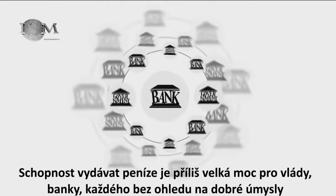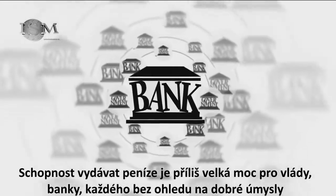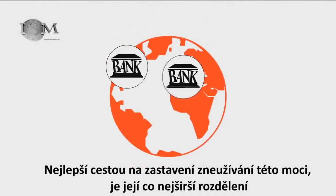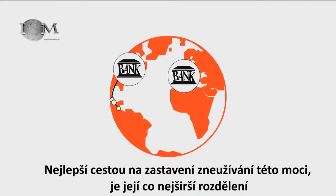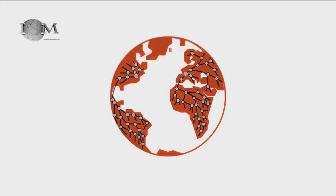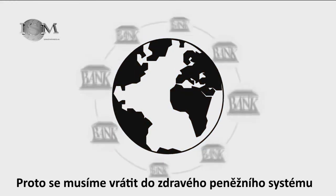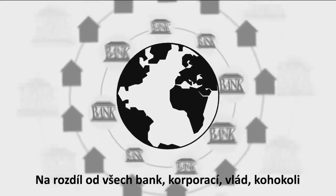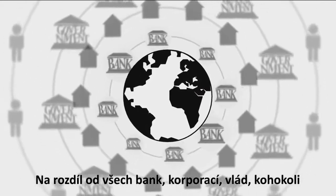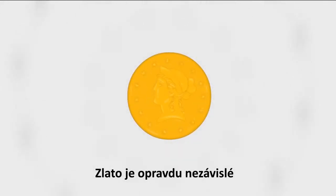The ability to issue money is too much power for governments, banks, anybody — however well-intentioned. The best way to stop the abuse of power is to spread it as thinly and widely as possible. That's why we need to get back to a sound system of money. Unlike any bank, any corporation, any government, or any body, gold really is independent.